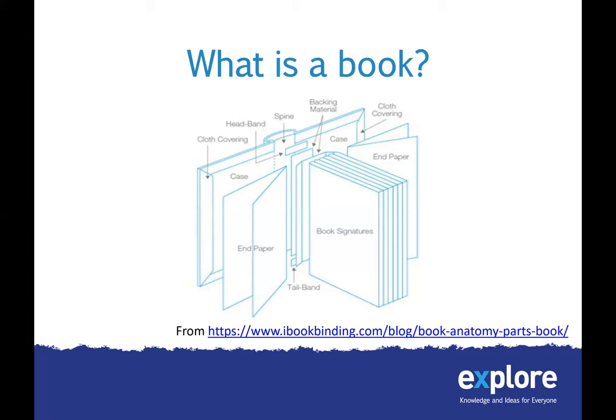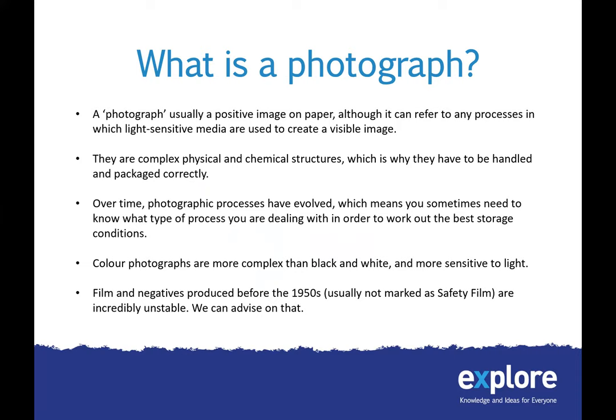The other thing we need to look at is: what is a photograph? The answer is something particularly complicated. By dictionary definition, a photograph is usually a positive image on paper, although it can refer to any process where light-sensitive media creates a visible image. Photographs are really complex physical and chemical structures — usually a paper backing with layers of chemicals on top, which react differently to additional chemicals used in manufacturing the image. Each chemical reacts slightly differently, and photographic processes have evolved, so there's never been one standard process. You need to know what type of process you're dealing with to determine the best storage conditions.